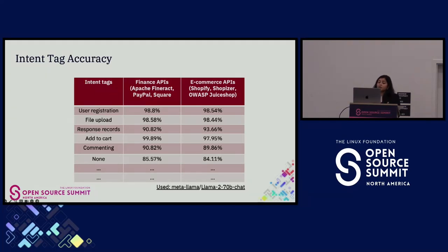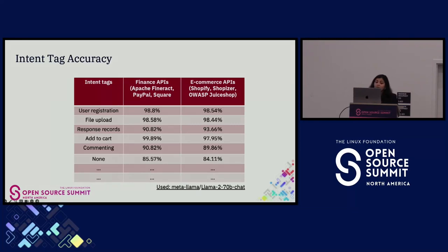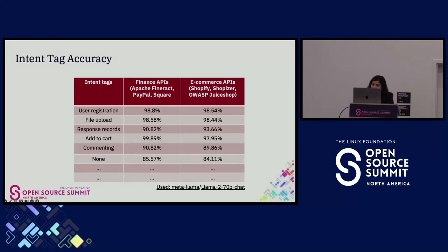For the framework to work, intent tagging accuracy needs to be as high as possible. We did a study tagging APIs into the defined flows and found accuracy varies between 90 and 99%. For user registration, we reached 99%. For the 'none' class, we are around 85%. Since we used LLaMA 70B Chat, we're hopeful that as models evolve, these numbers will go further up.